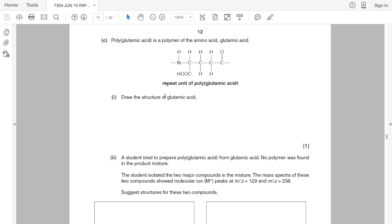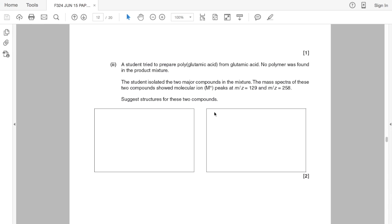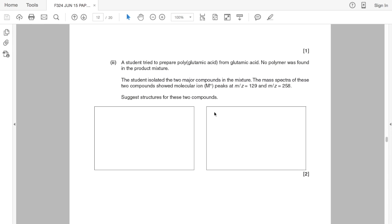The question moves on to a different amino acid now based around glutamic acid. We are given the repeat unit of polyglutamic acid and we have to draw the structure of glutamic acid from this. We are then told that a student tries to prepare polyglutamic acid from glutamic acid but no polymer was actually found in the product mixture. The student isolated two major compounds in the mixture and the mass spectra showed molecular ion peaks at M over Z 129 and M over Z 258. We've got to come up with structures for the two compounds.